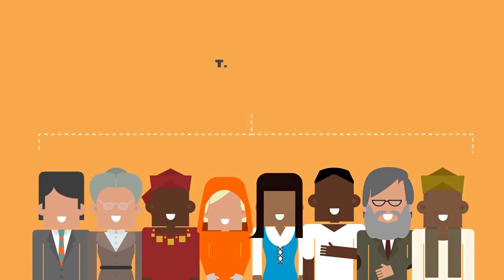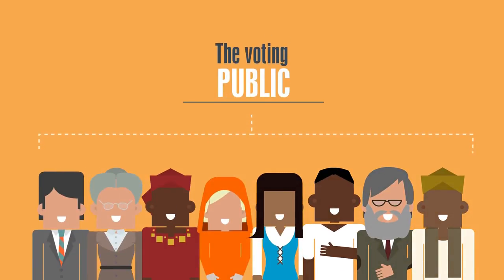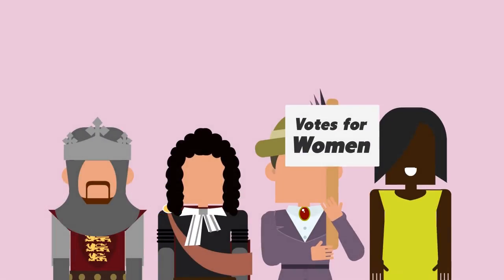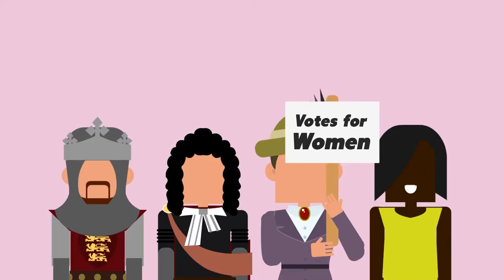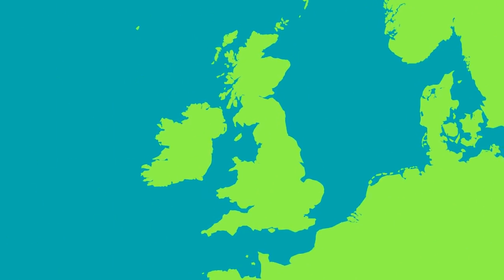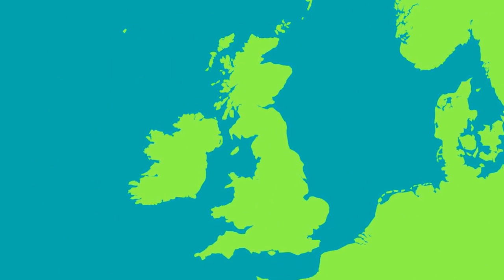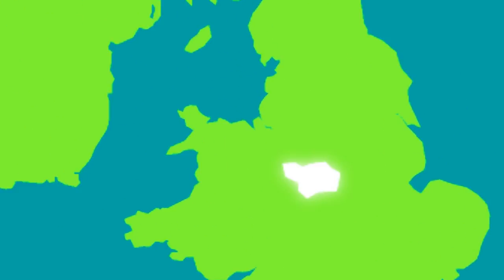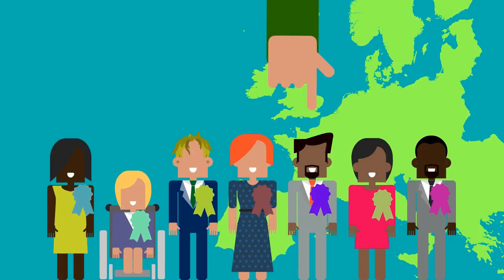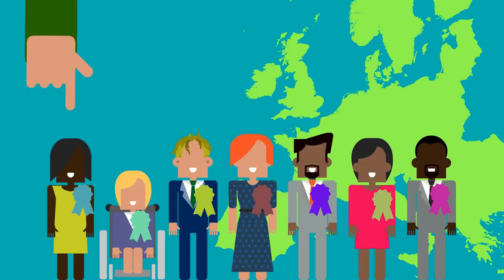In the UK, we live in a democracy, which means power is in the hands of the people through our right to vote. Throughout history, lots of people in the UK have campaigned for the voting rights we have today. There are lots of different types of elections to vote in — general, local, European. Let's take a closer look at how MPs are elected to the House of Commons through the general election.